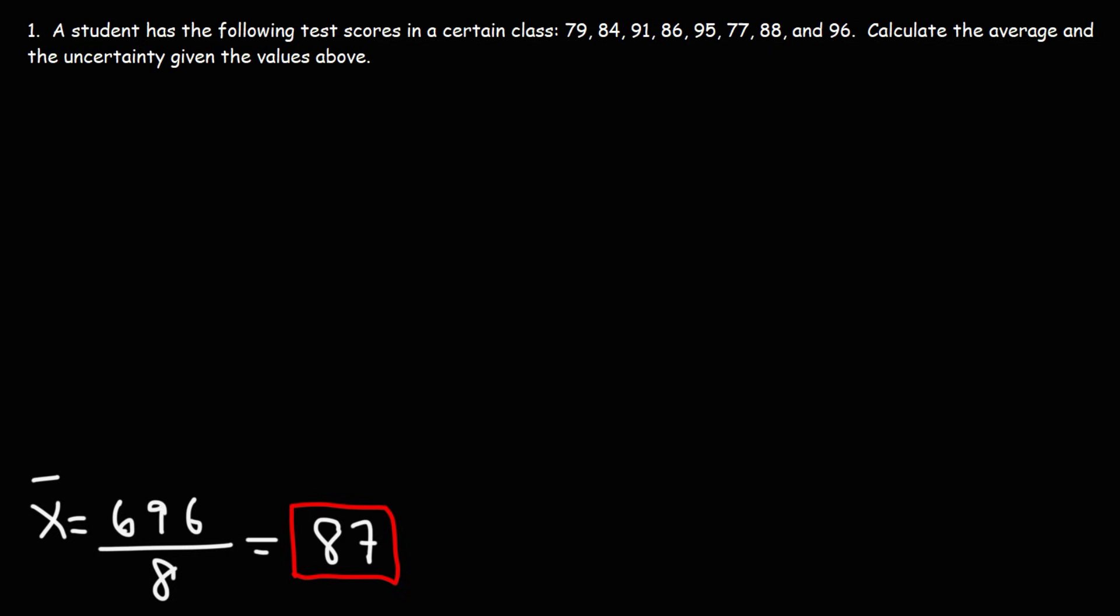Now before we calculate the uncertainty, let's talk about the formula. Let's draw a number line. In the middle of the number line we're going to put the mean. The mean is 87.